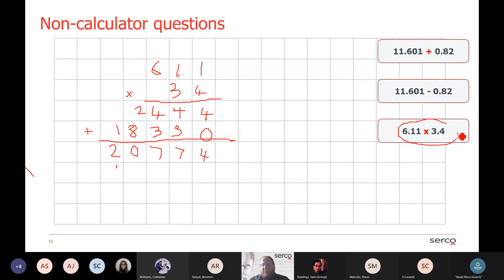We now need to go back to the question and look at how many decimal points are in the question. If we look after 6, there's 1, 1, 2 decimal places. And after 3, there's 0.4, so there's another decimal point there. So there are three decimal points in our question. If we go to our answer that we've got, I need to count three decimal points. There were three decimal points in total in the question. So in my answer, I count 1, 2, 3 decimal points, which means I put my decimal point there. So my answer is actually 20.774.